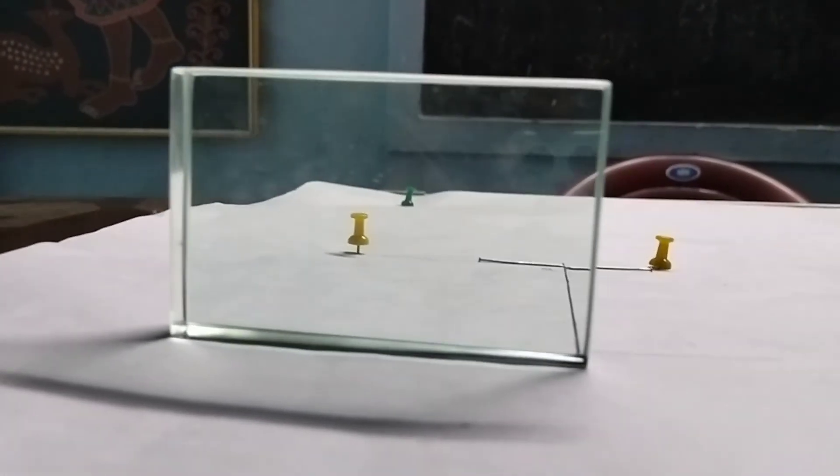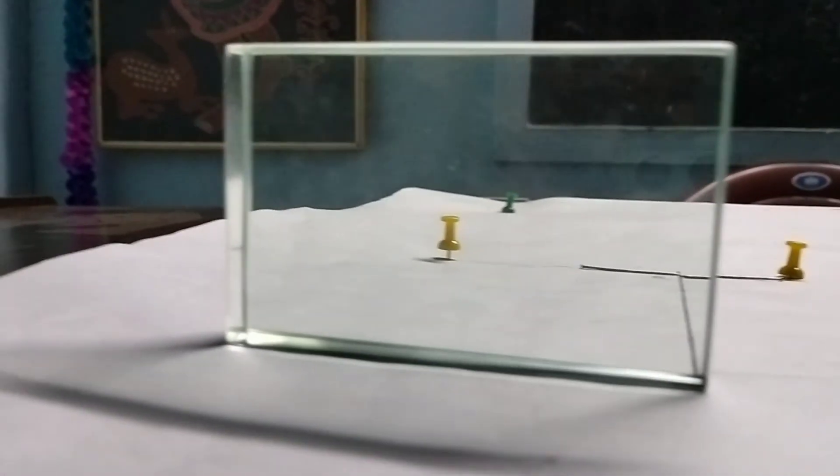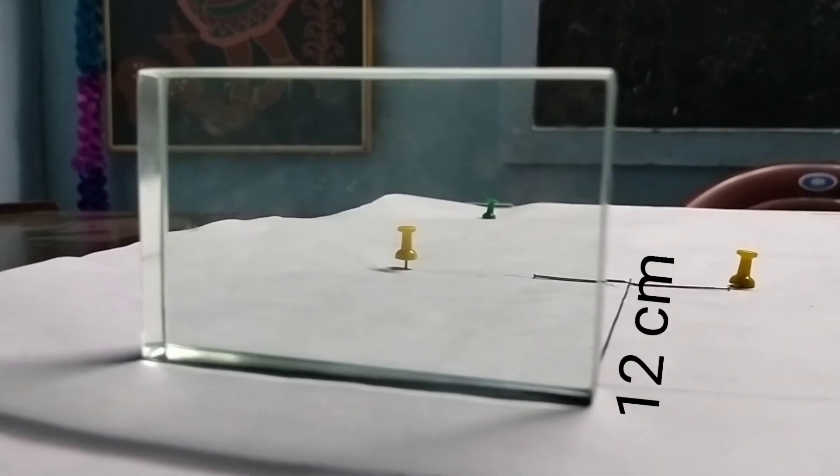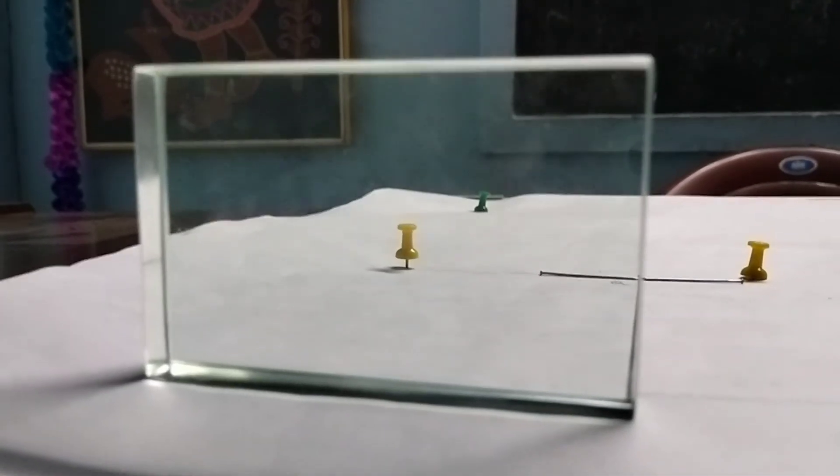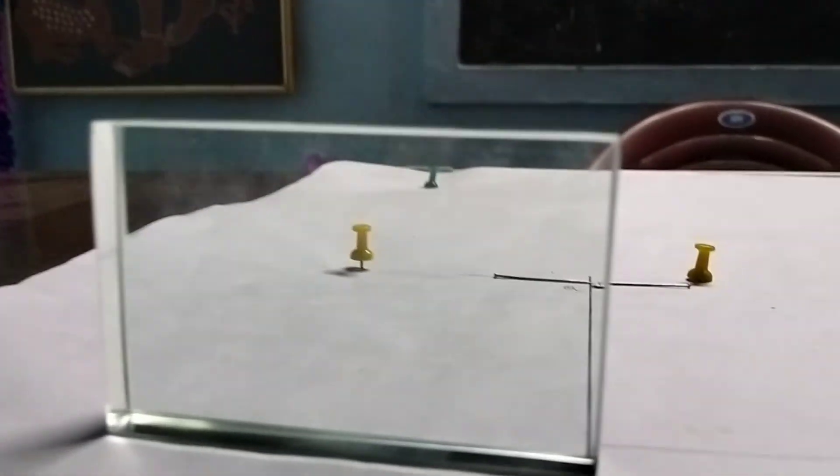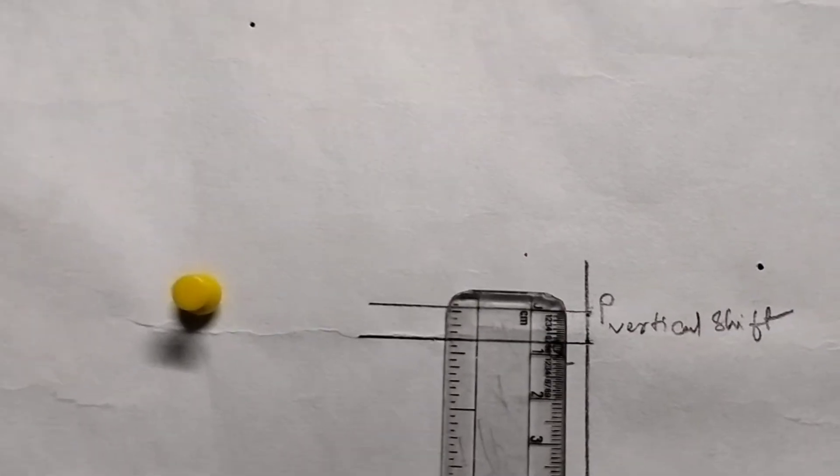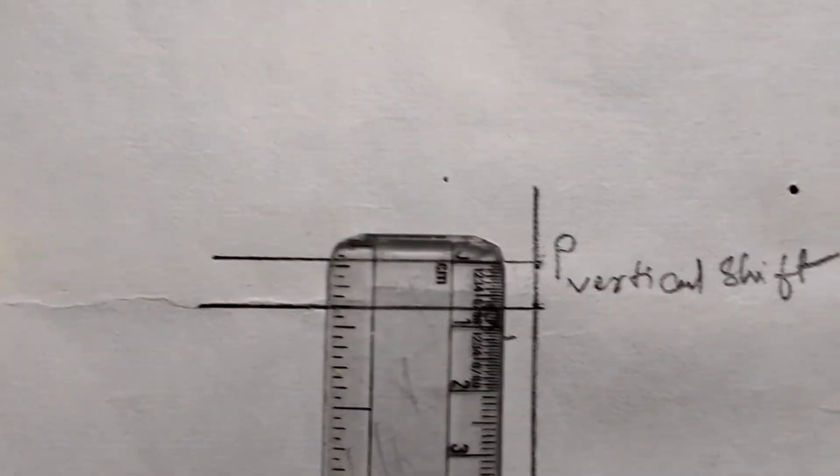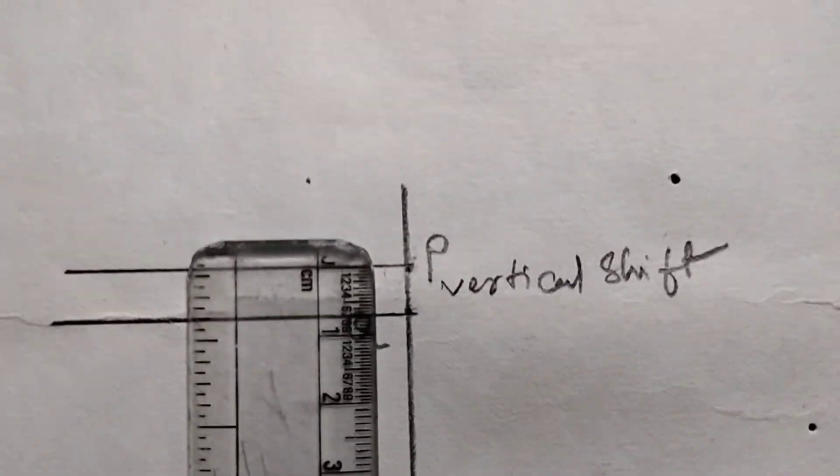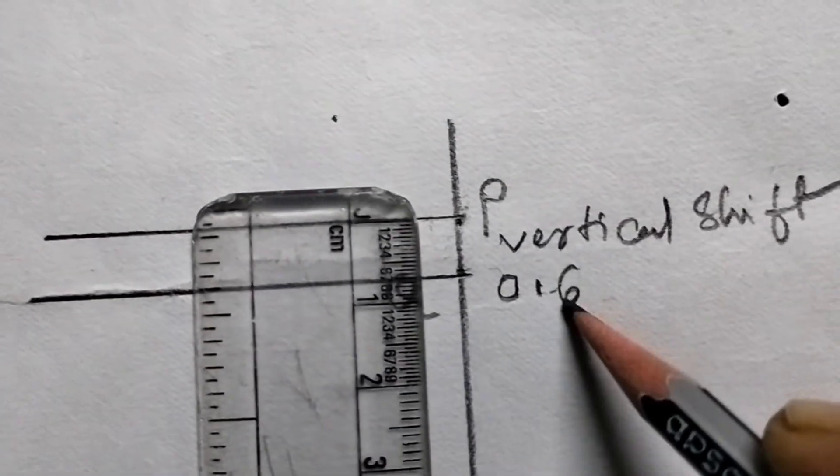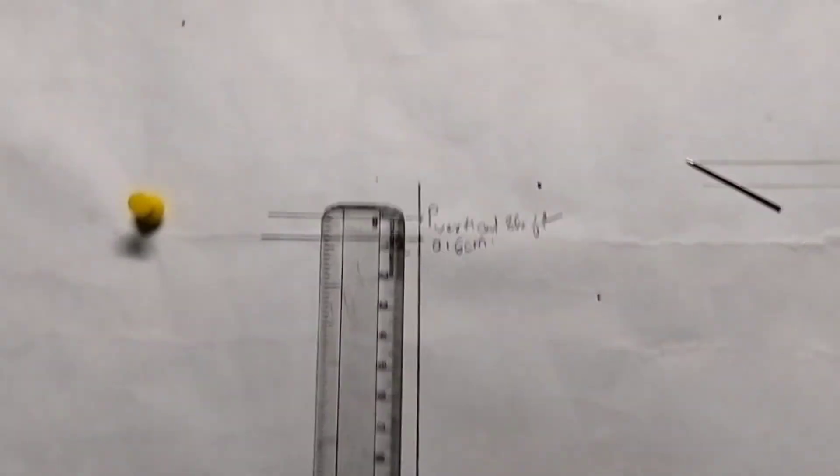Earlier we done experiment with the distance of 15 cm. Now we repeat the same experiment with 12 cm. For both cases the vertical shift will be the same. Though the distance is different, vertical shift will be the same, that is 0.6 cm for both cases. We will get the same vertical shift placing needle at different distances.